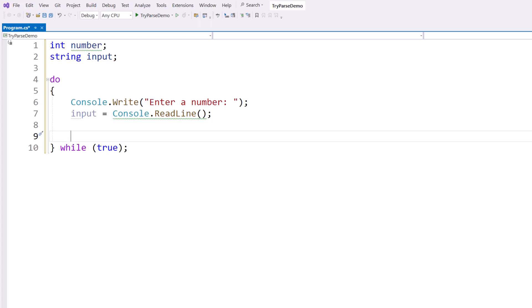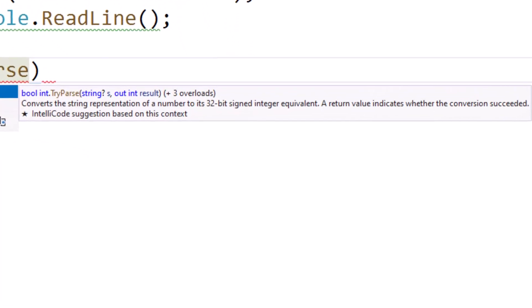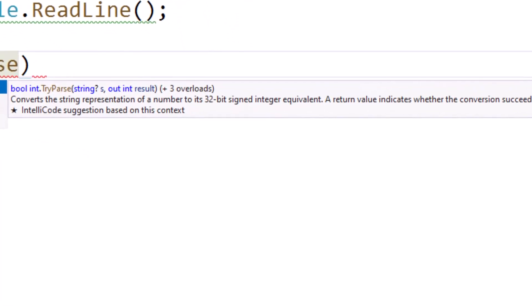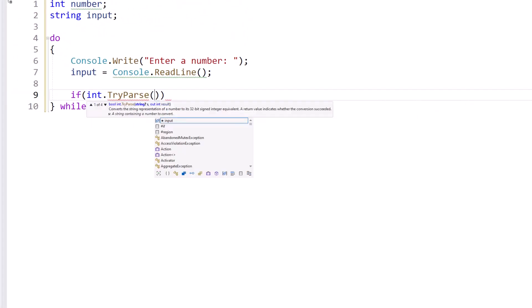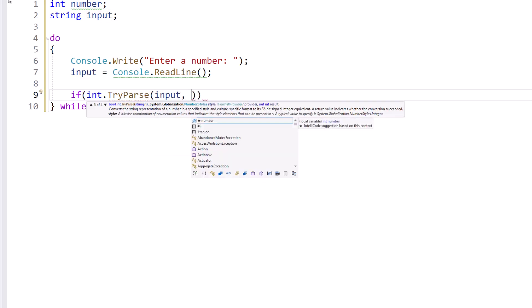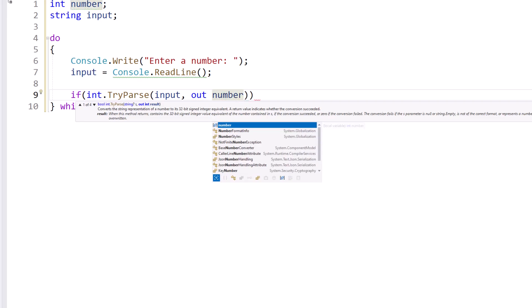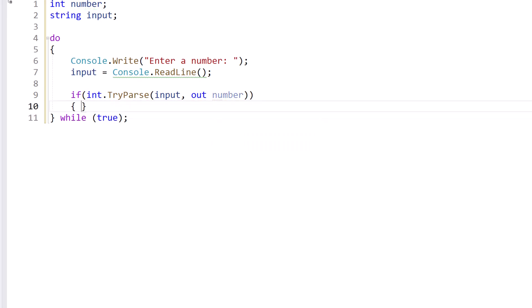And then I want to say if int dot try parse. And we can see as the IntelliSense pops up that it does return a boolean and it takes in a string and then outputs a result. So the string input is going to be my input variable. And then I'm going to say out number. And then I'm going to put my curly braces.